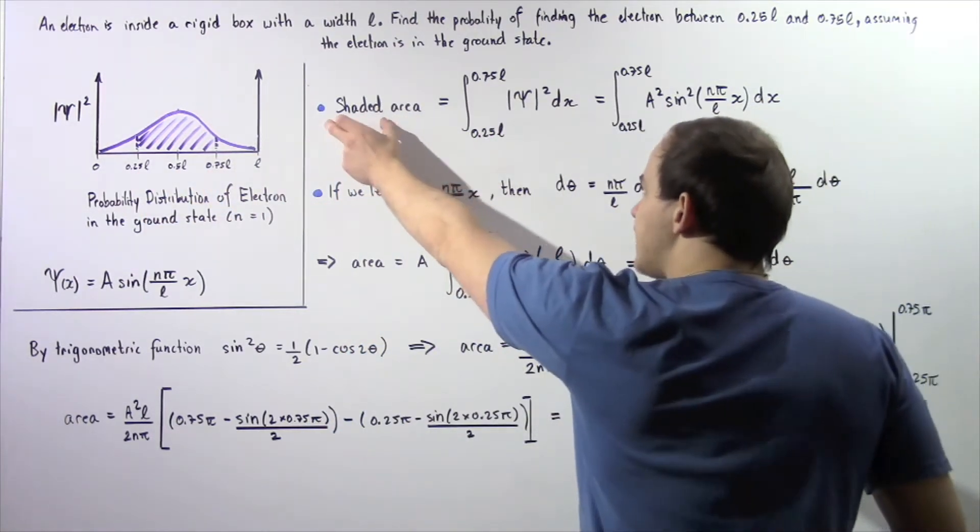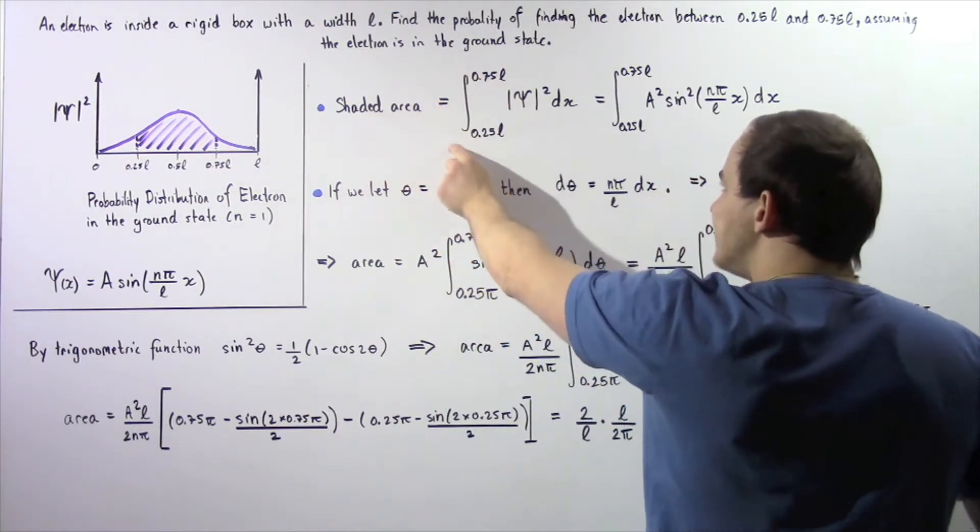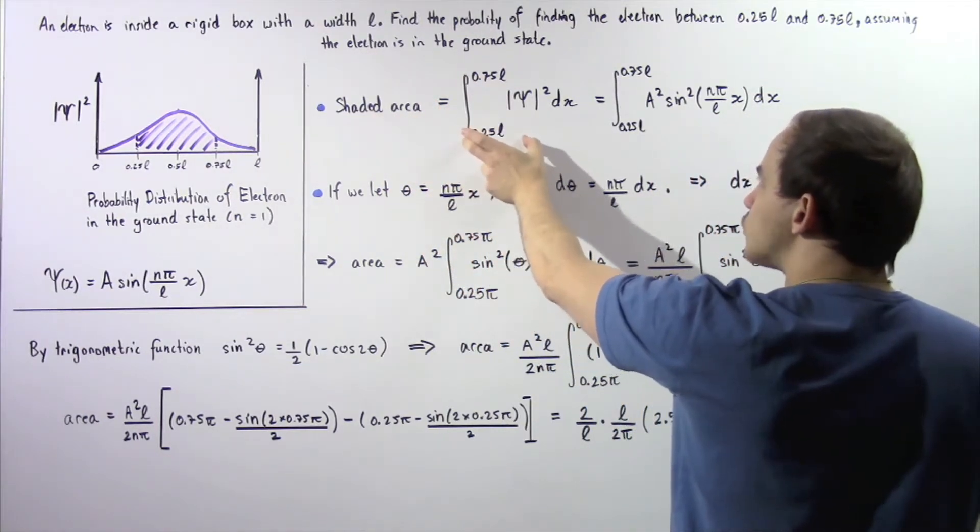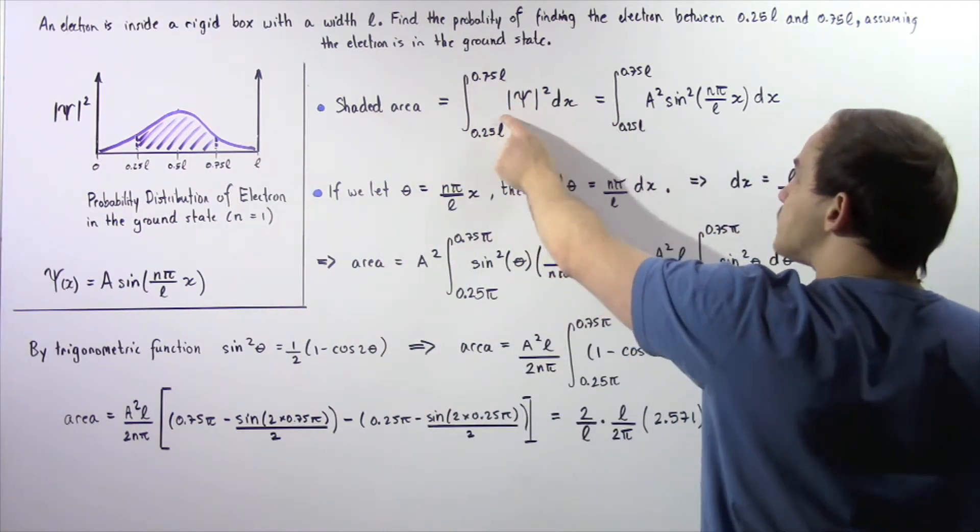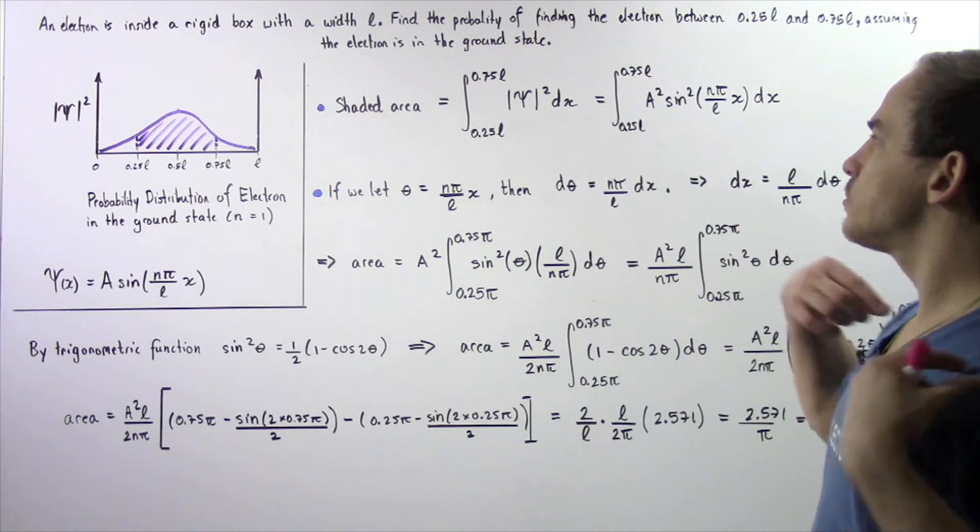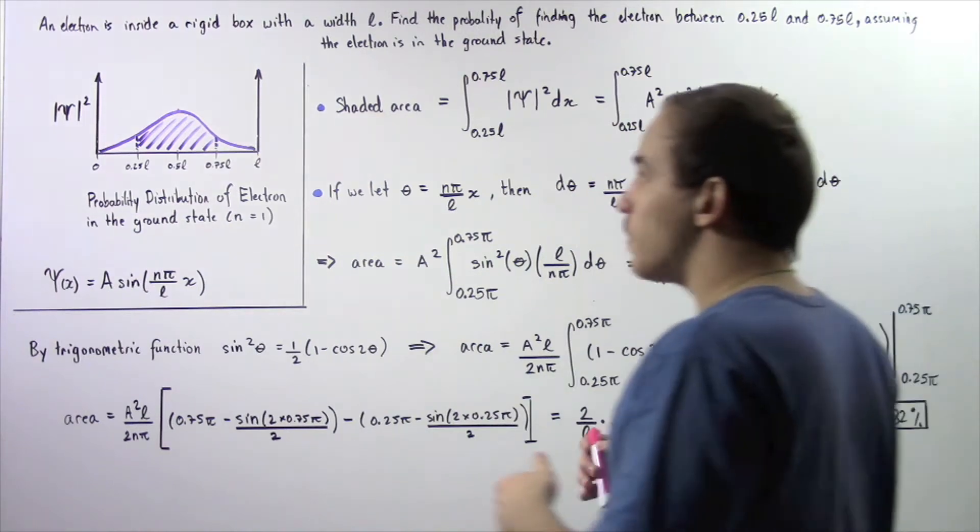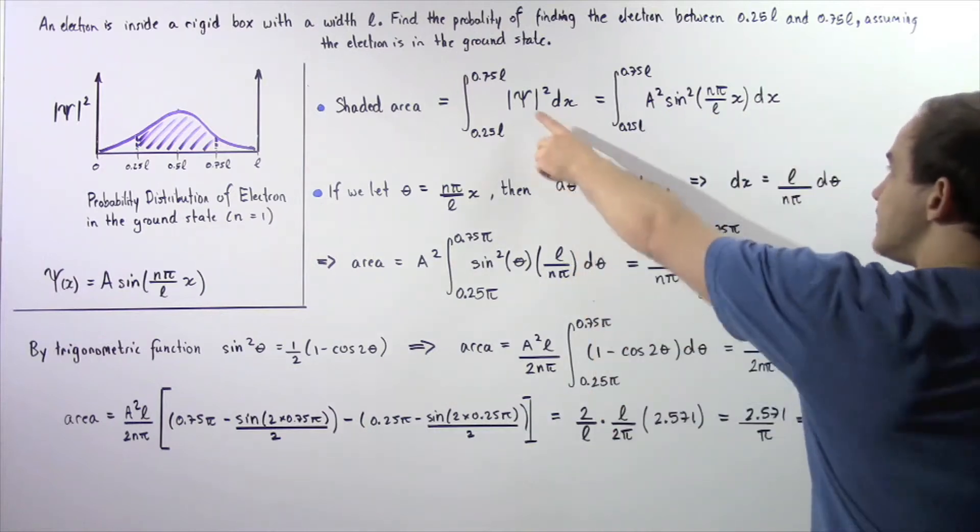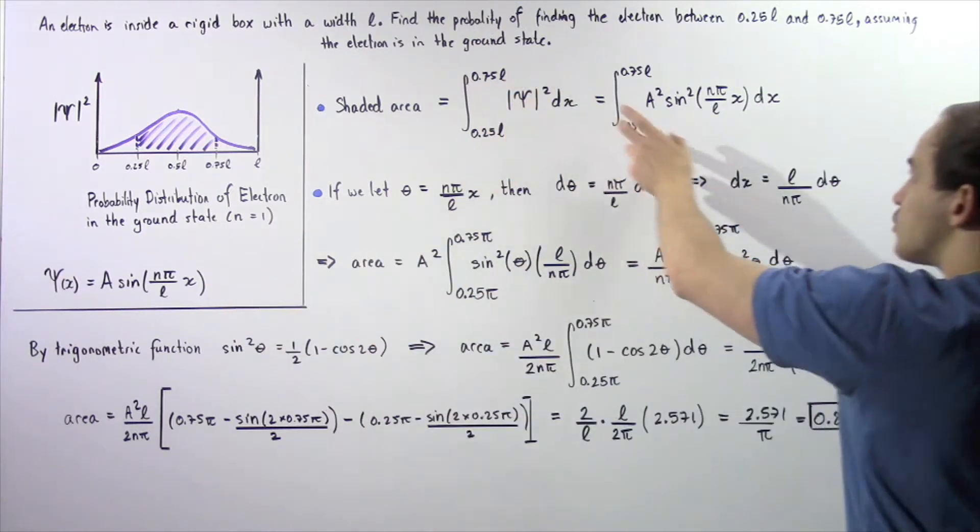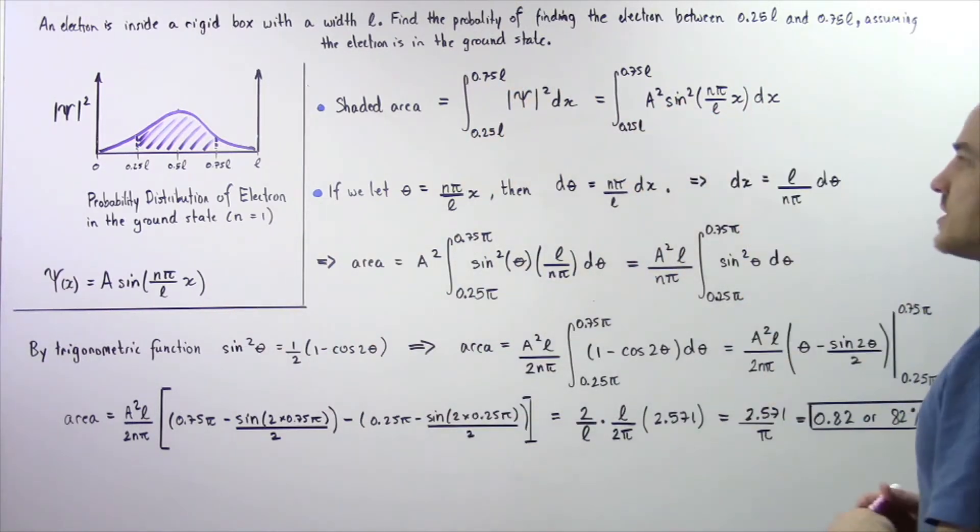The shaded area is equal to the integral from the lower boundary to the upper boundary of our function, the square of absolute value of ψ with respect to dx. Because ψ is equal to this quantity, we replace ψ with this and square it to get the following result.